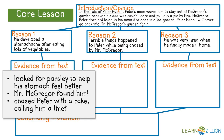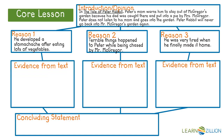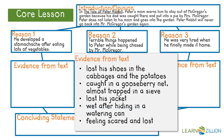My next step will be to repeat the same steps I took in finding evidence for my first reason and do the same with my other two reasons. Here's reason two and the evidence that goes along with it: he lost his shoes in the cabbage and the potatoes, he was caught in a gooseberry net, almost trapped in a sieve, he lost his jacket, got wet after hiding in a watering can, feeling scared and lost. These support my reason two — terrible things happened to Peter while being chased by Mr. McGregor.